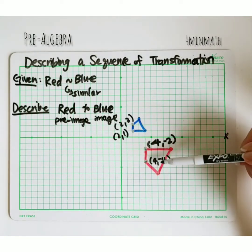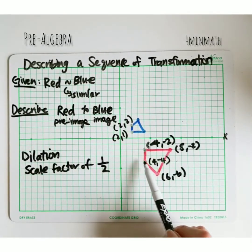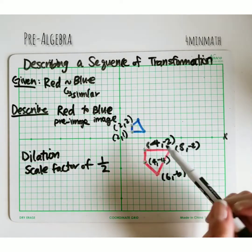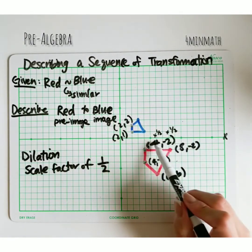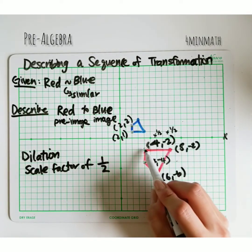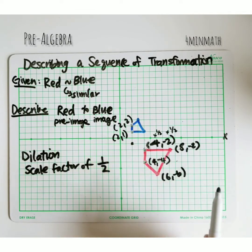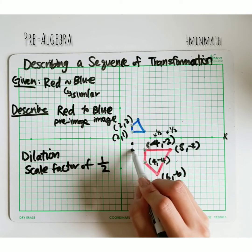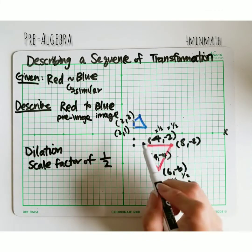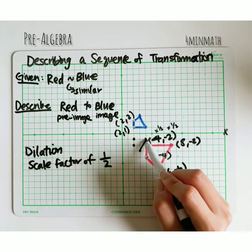One thing to know is that the negative signs won't matter right now, because of the reflection that also took place — so we'll ignore the negative signs for now. Here I wrote all the coordinates of the pre-image, and I'm going to apply a dilation with a scale factor of one half by multiplying all coordinates by one half. So (4, -2) becomes (2, -1), (4, -4) becomes (2, -2), (6, -6) becomes (3, -3), and (8, -2) becomes (4, -1). That gives me the reduced shape.